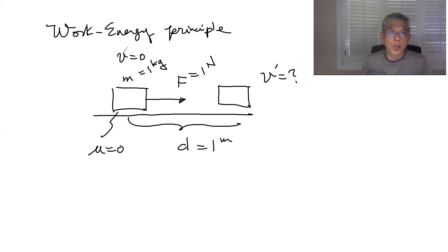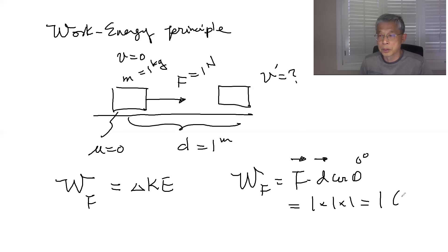So according to the work-energy principle which basically says that the work done by this force here will be equal to the change in kinetic energy. So then the work done by f is equal to fd cosine theta which is equal to one times one and f is going this way, d is going this way, so theta is equal to zero degrees times one. So that's equal to one joule.